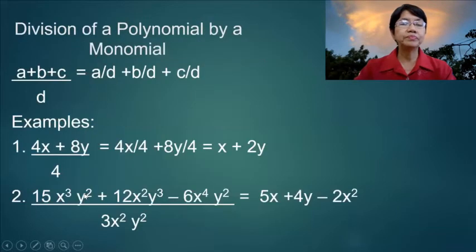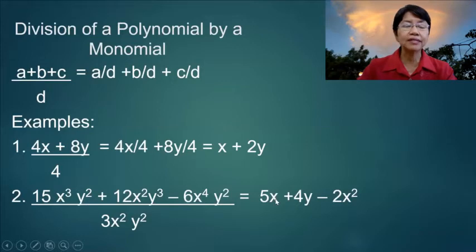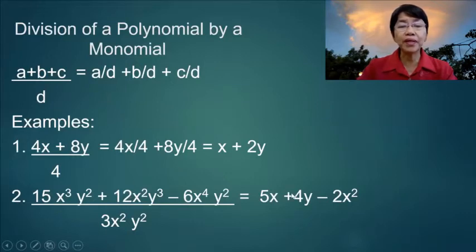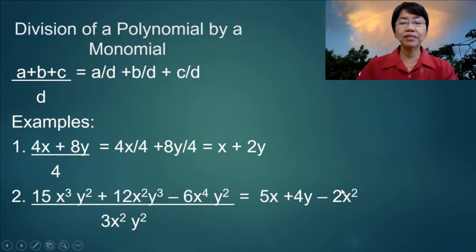Number 2: 15x cubed y squared divided by the monomial divisor 3x squared y squared. So 15 divided by 3 equals 5, then x cubed divided by x squared equals x, and y squared cancels. Then 12 divided by 3 equals 4, and x squared cancels. y cubed divided by y squared equals y. Then negative 6x to the 4th: 6 divided by 3 equals negative 2, x to the 4th divided by x squared equals x squared, and y squared cancels.